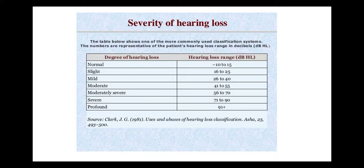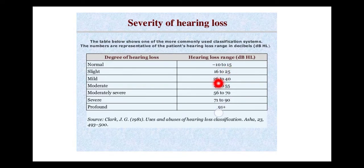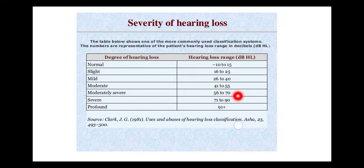We should have detailed, in-depth knowledge about the hearing loss range. Normal is minus 10 to plus 15 dB. 16 to 25 is slight. 26 to 40 is mild. 41 to 55 is moderate. 56 to 70 is moderately severe. 71 to 90 is severe. Beyond 91 is profound.